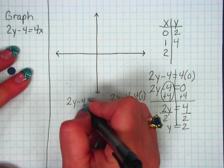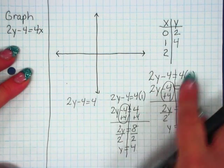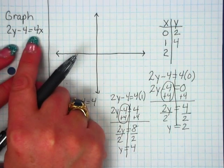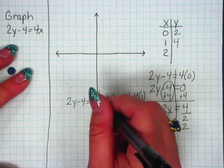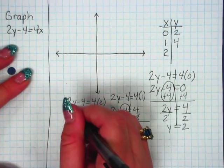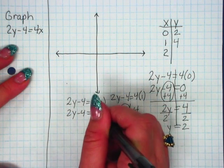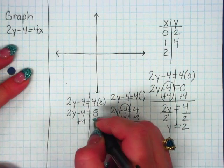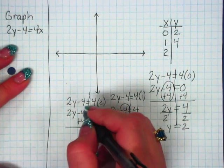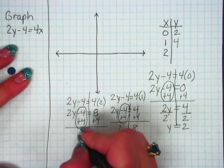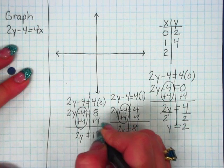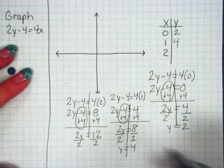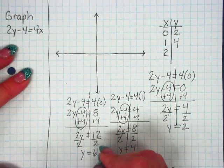One last time. 2y minus 4 equals 4 times x, which is 2 in this case. 2y minus 4 equals 8. Draw your mirror. Opposite operations. This is a 0. 2y equals 12. Opposite operation again. It's multiplication, so I divide. y equals 6.